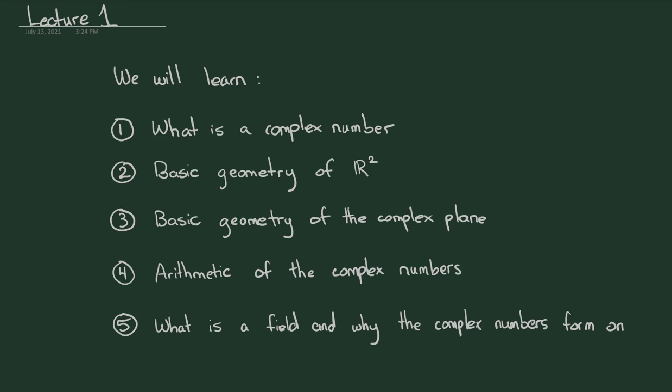In this course we don't assume anything beyond whatever complex numbers you might have seen in high school. We will start with what is a complex number, give a reminder of the basic geometry of the plane R² and show how the geometry of the complex plane is related to that of R². Then give a basic overview of the arithmetic of complex numbers, and finally we will say what is a field and why the complex numbers form one. Part five is really the beginning of a university level treatment of complex numbers.